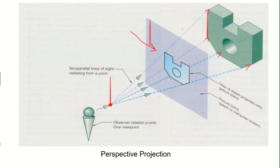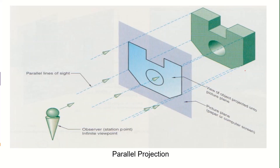The location of the screen matters in perspective projection. If the screen is closer to the object, you get a larger projected image; if the screen is closer to the observer, the image appears smaller compared to the true dimensions of the solid model. In either case, the projected image on the screen is not a true surface or edge representation of the solid model.